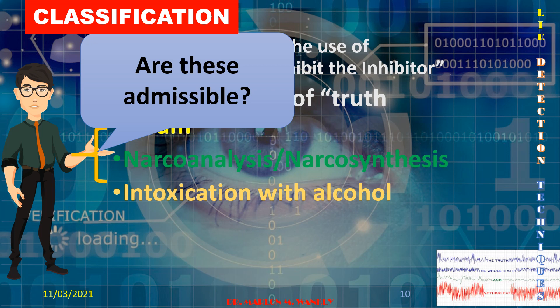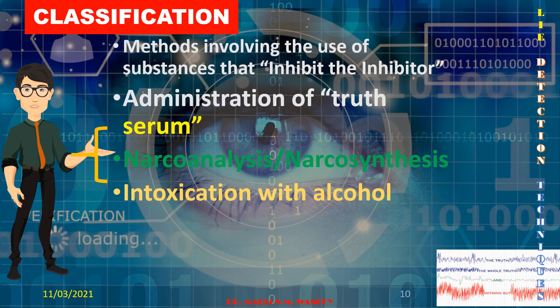Next is intoxication with alcohol — 'In vino veritas,' meaning 'In wine, there is truth.' Of course, this depends on the volume of alcohol consumed. When a person is totally drunk, their mind could be impaired and they don't know what they are talking about. But if the person reaches the state of talkativeness, they might tell the truth — they might tell their feelings to someone else because of the alcohol.